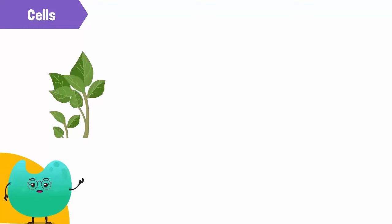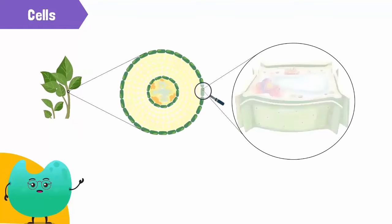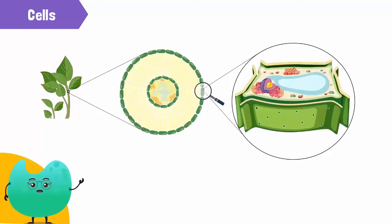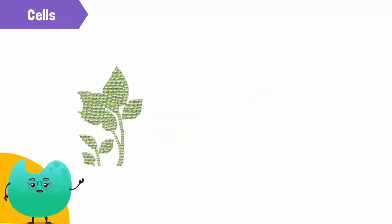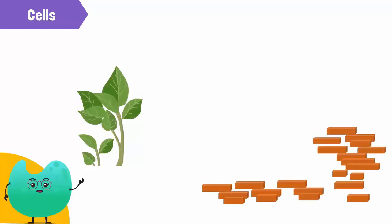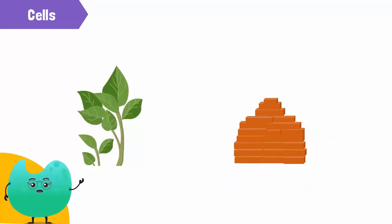Cells are so tiny that they cannot be seen by the naked eye, but all of them join to form a bigger organism that we can see — just like a house cannot be pictured until you see all the bricks come together.